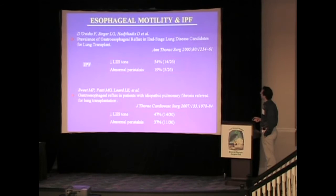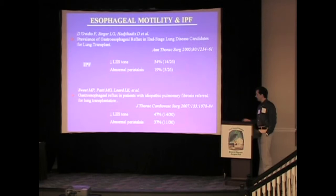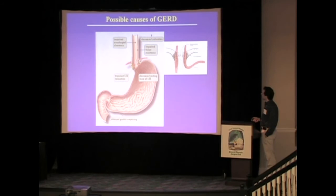Looking at manometry findings in pulmonary fibrosis patients — end-stage lung disease candidates for transplant — 54% had reduced LES tone and 19% had abnormal peristalsis. Similar results came from the group in San Francisco, reported by Dr. Sweet: reduced LES tone in 47% of pulmonary fibrosis patients referred for lung transplantation and abnormal peristalsis in 37%. Post-transplant, the Toronto group identified that both at 3 months and 12 months, LES tone is reduced in about 65% of all patients. So we have impaired esophageal clearance, reduced resting tone, and delayed gastric emptying in these patients.